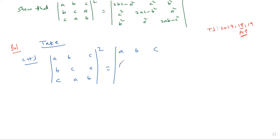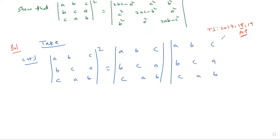The expansion is: det[a,b,c; b,c,a; c,a,b] into determinant of the same thing [a,b,c; b,c,a; c,a,b]. We always have to focus on RHS — because these are 'prove that' questions, LHS should equal RHS. Take LHS and try to get RHS — that is the only solution.